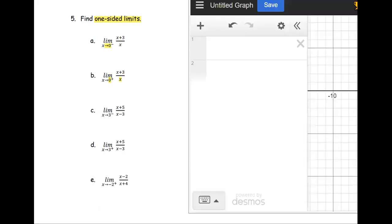We're going to look at the graph of that function and use the graph to determine the one-sided limit. I'm going to go to desmos.com and then type in the function y equals the quantity x plus 3 divided by x. And we get the graph, move the graph over a little bit.